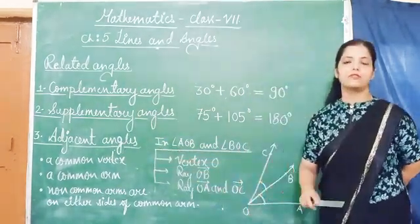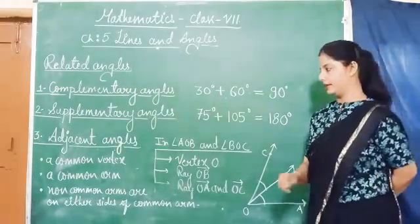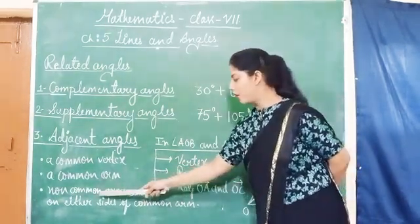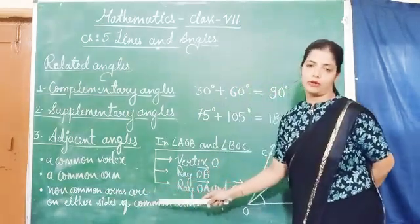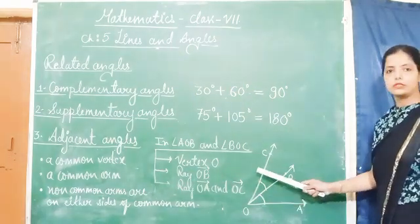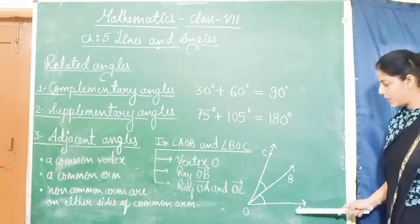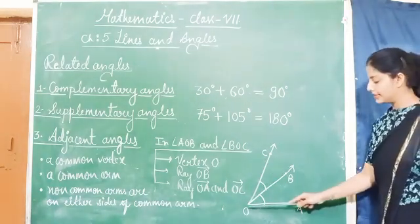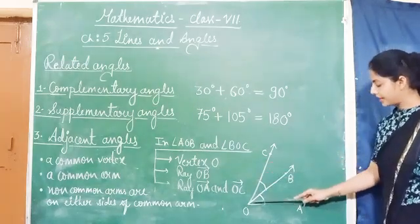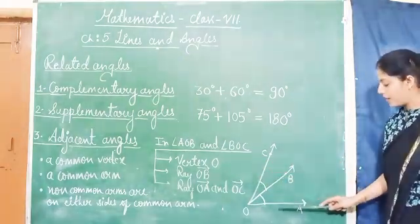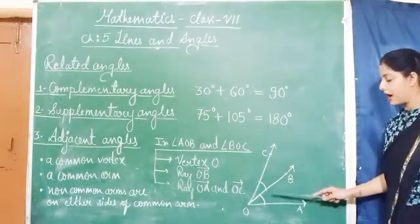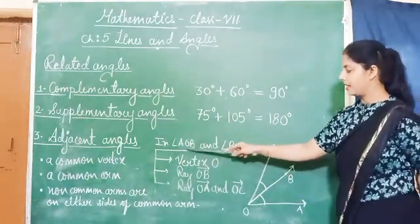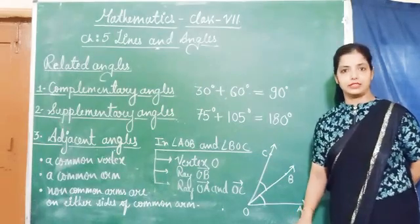Adjacent angles: we will verify two conditions between two angles. First, both angles have a common vertex. Second, a common arm and non-common arms on either side of the common arm. For example, in angle AOC, we take two angles: angle AOC and angle BOC. In these two angles, vertex O is common, ray OB is common, and rays OA and OC — the non-common arms — are on either side of OB. All conditions are verified, so angle AOC and angle BOC are adjacent angles.